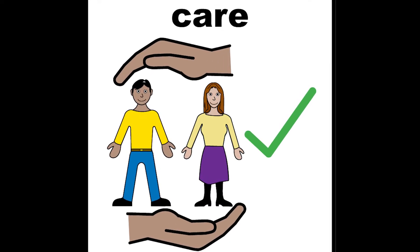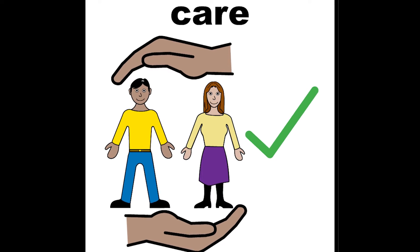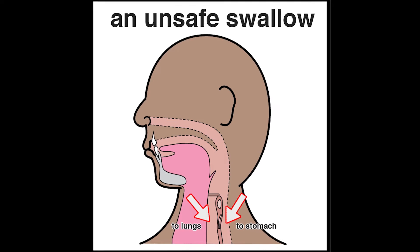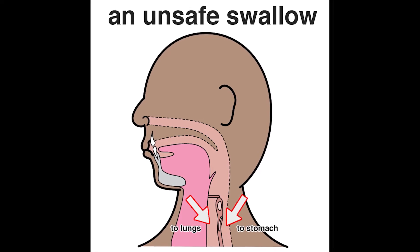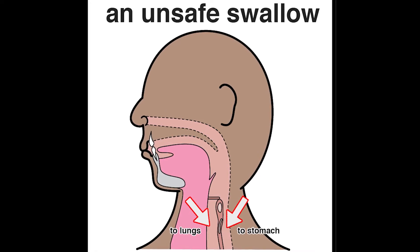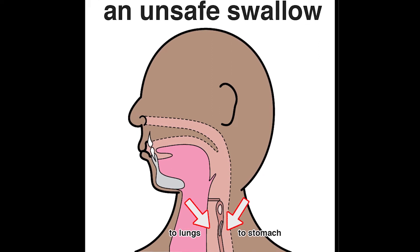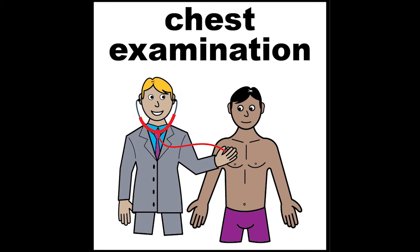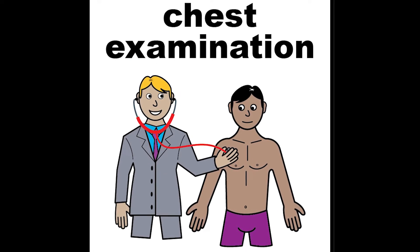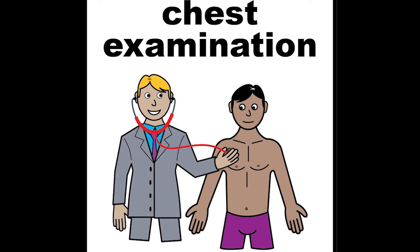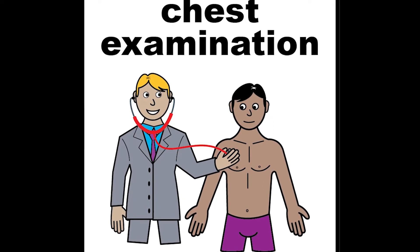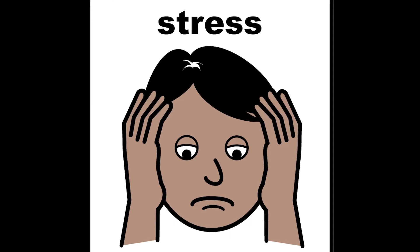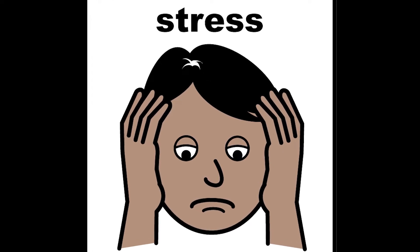Some of the deaths of people with learning disabilities are due to the person having swallowing difficulties. An unsafe swallow, also known as dysphagia, is when someone has difficulty chewing and swallowing and can cause food to go down the wrong way. This can cause a chest infection and choking. It can make the person unwell and lead to aspiration pneumonia, weight loss and lots of other health problems. It can also cause stress for the person and their carers.